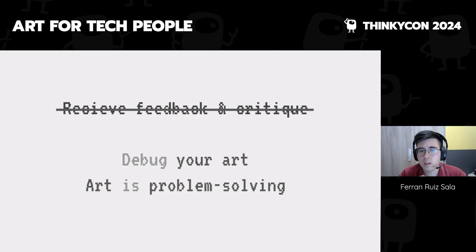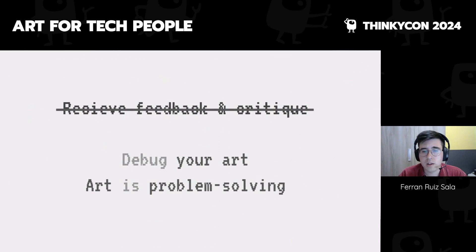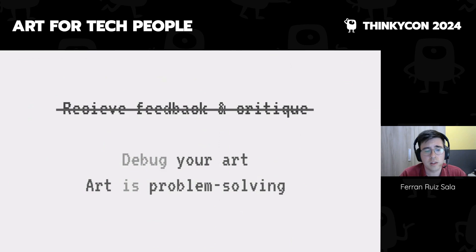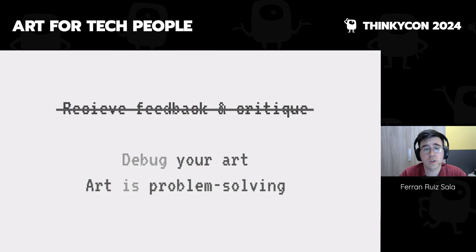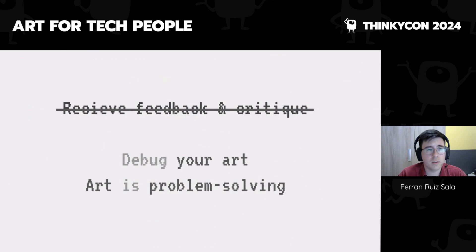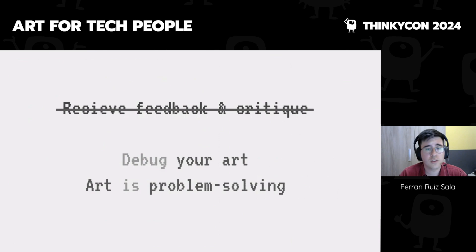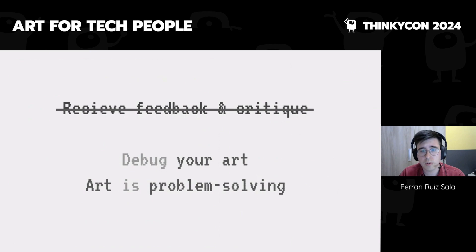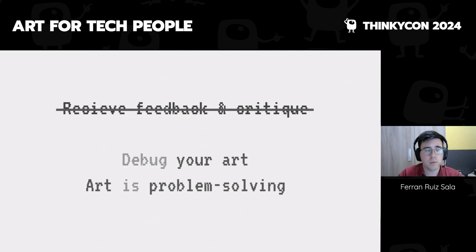The reframing here is: instead of talking about feedback and critique and asking 'is something good or bad,' think in a problem-solving, techy manner. Look at a piece of art and ask: what does this do? Does it work? What does it need to do? There's a huge distance between 'good or bad' and 'useful' or 'communicating a specific idea.' That's a much easier conversation to have. We're talking about debugging art — art as problem solving — and it's easier to not attach your personal value to your art that way.